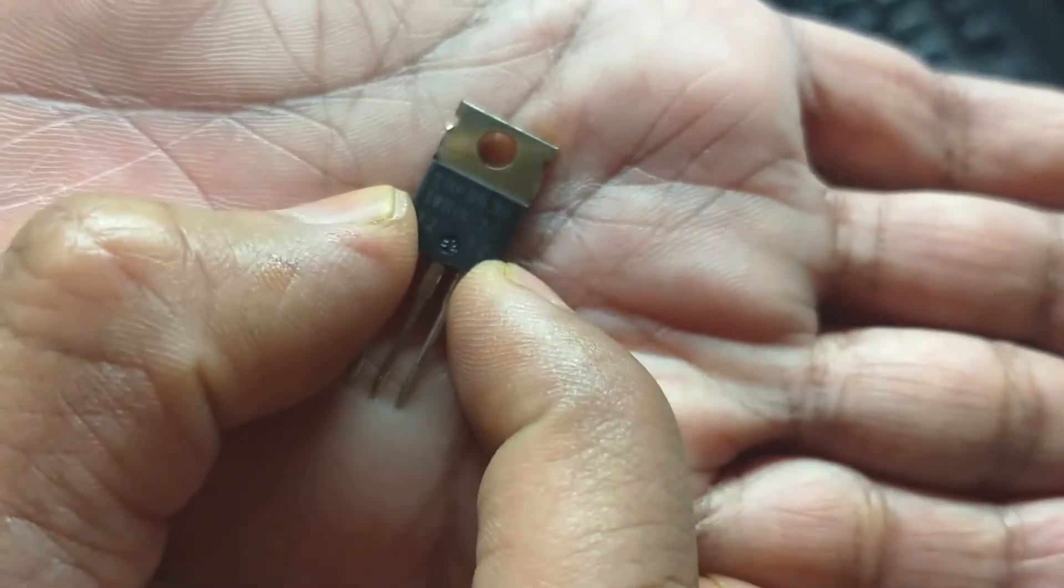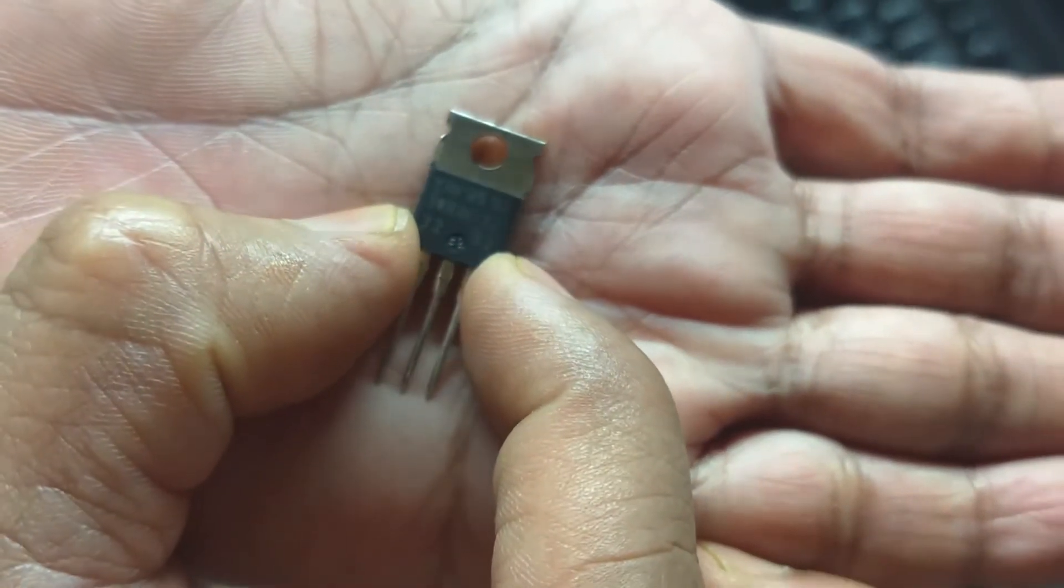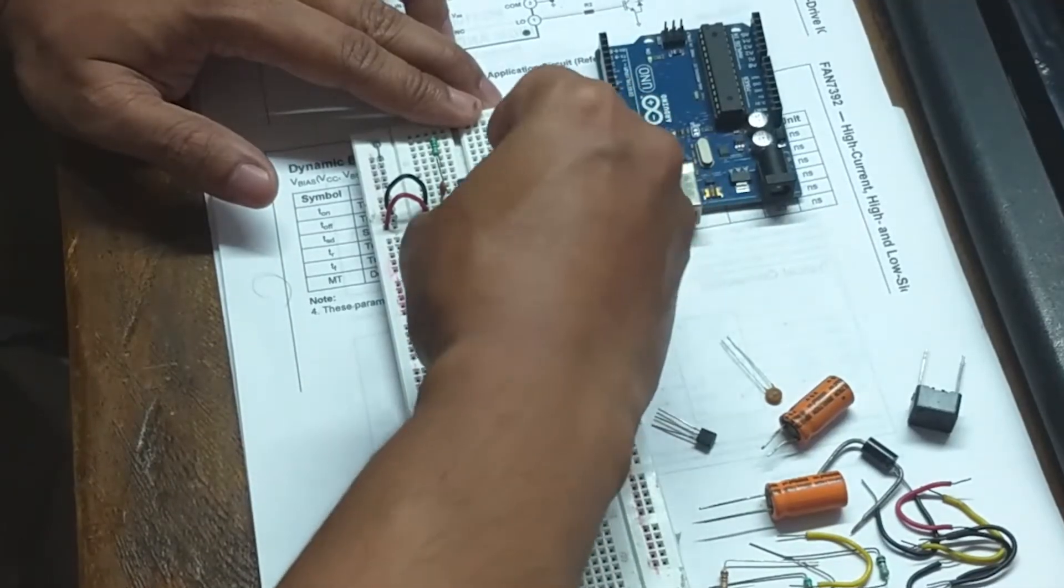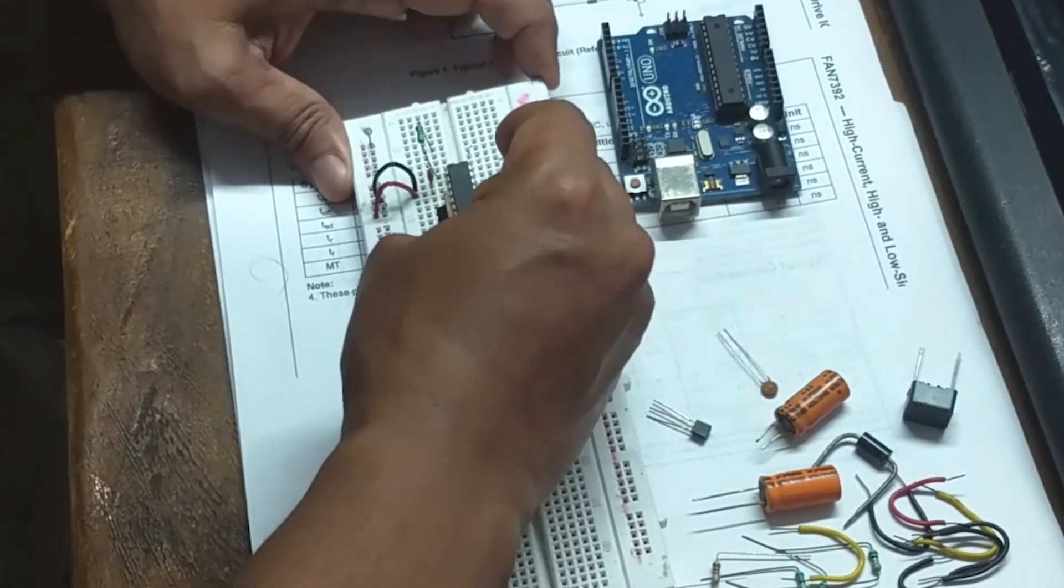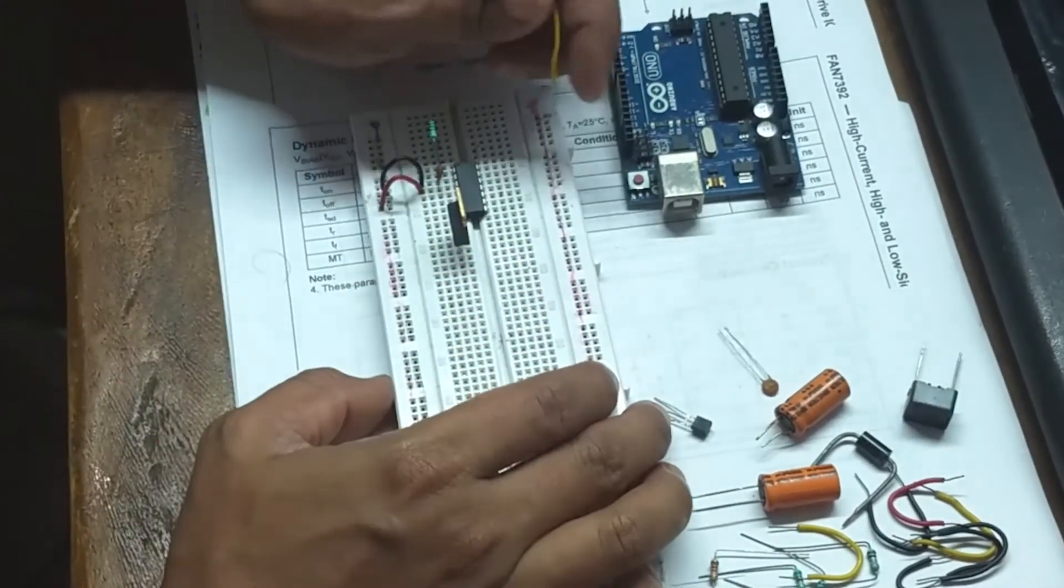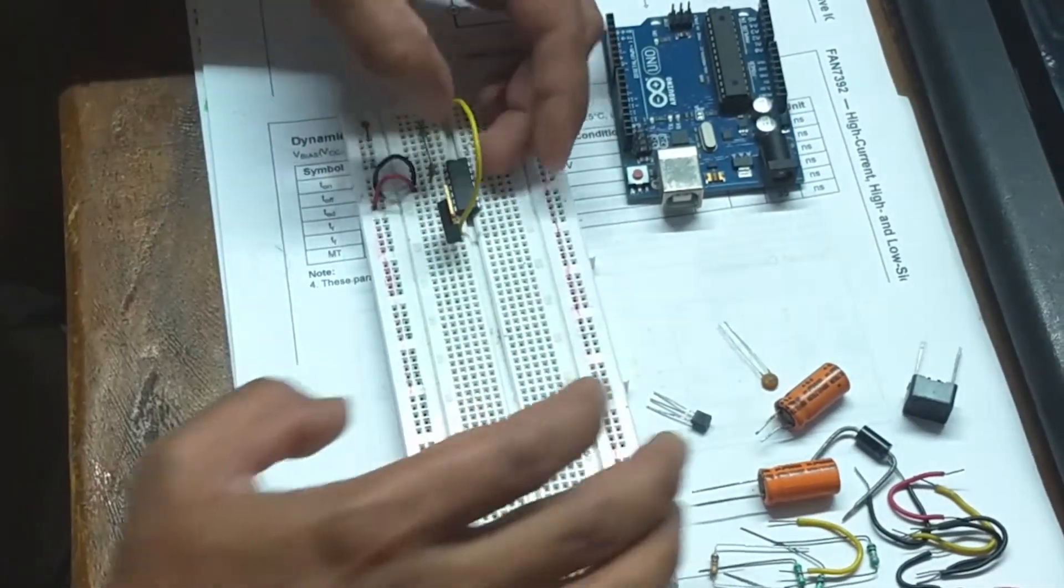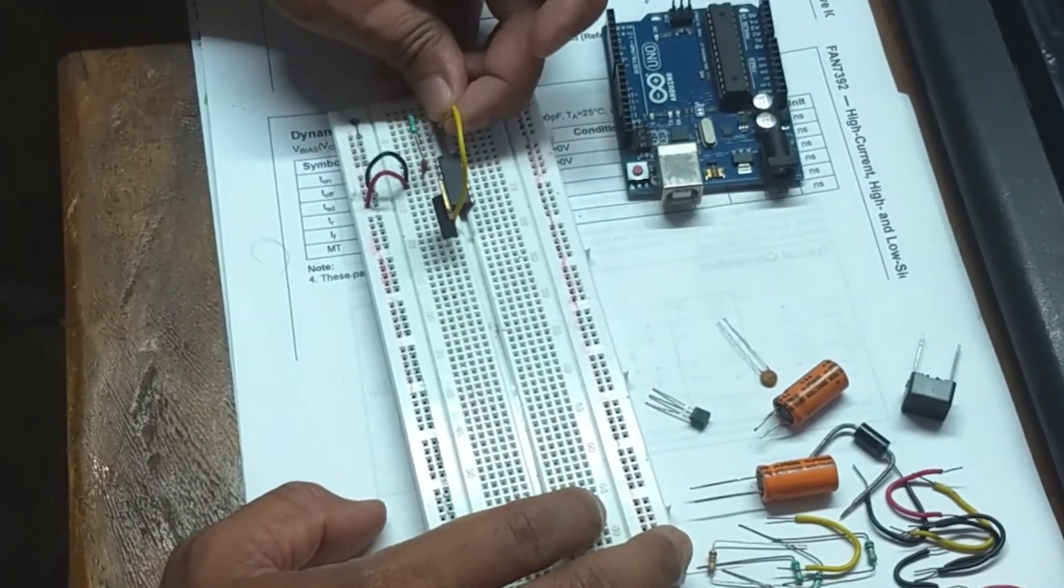I am using this IRF9530 P-channel MOSFET as the switching element. I could use the NPN bipolar junction transistor also, but MOSFETs are recommended due to their higher efficiency.